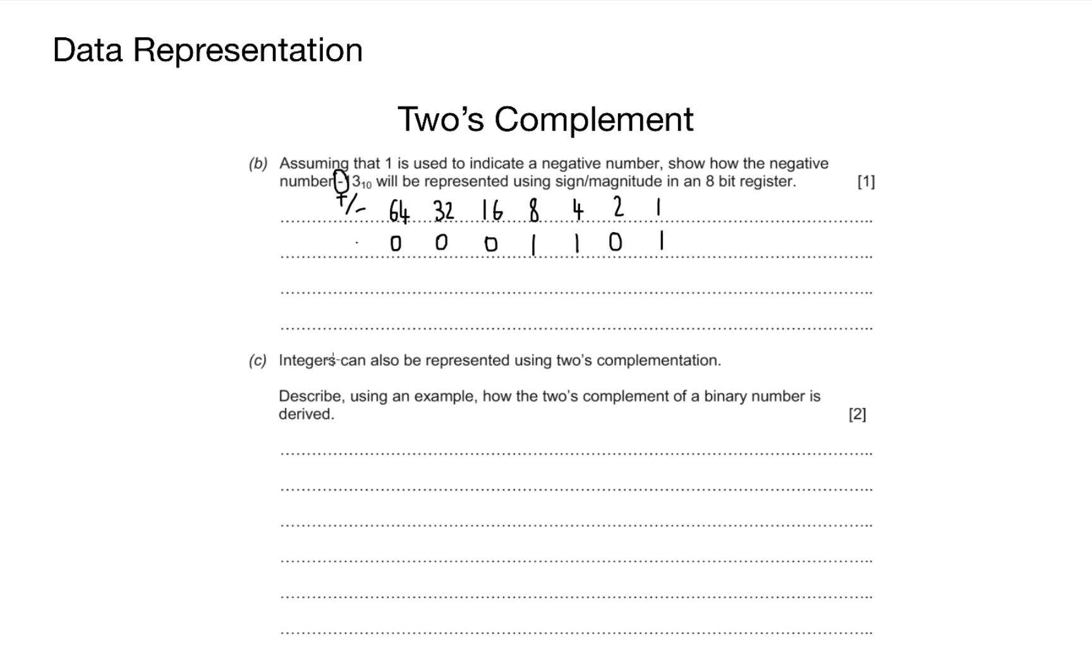I'll take 1 eight, 1 four, and 1 one to produce 13, and I make my most significant bit 1. That's it for one mark. Nice and simple.